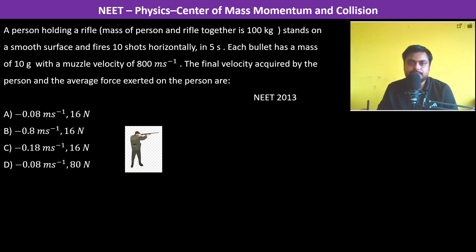A person holding a rifle, mass of person and rifle together is 100 kg, stands on a smooth surface and fires 10 shots horizontally. Each bullet has a mass of 10 grams and a muzzle velocity of 800 meters per second.